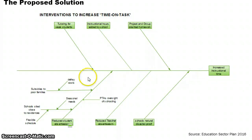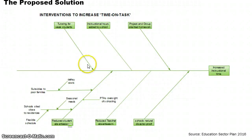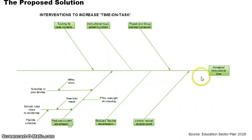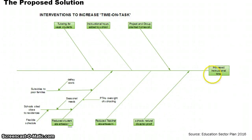This fishbone diagram — for those of you unfamiliar with it — is a graphic way of showing the contributing factors to a particular outcome. In this case, the desired outcome is increased instructional time; in other words, more time spent on teaching a particular topic, for example mathematics.